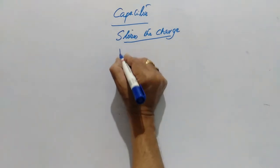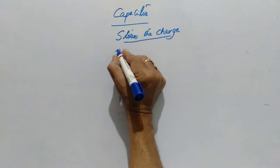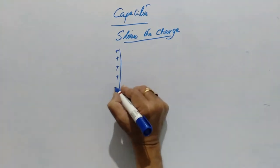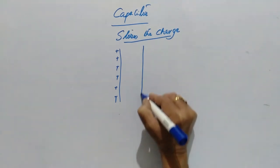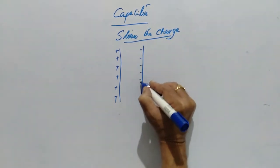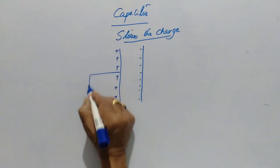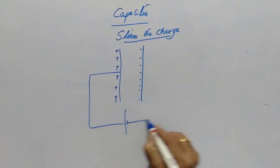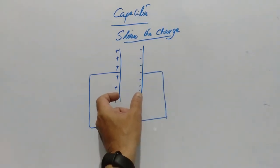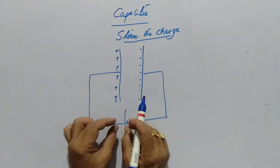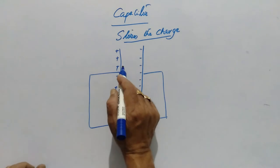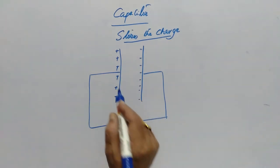If capacitor stores the charge, then how does it act like an energy storage device? When on one plate a positive charge and on other plate a negative charge is given with the help of a battery, then this acts like a capacitor. When we remove the battery, the charges are still stored on the plates of this capacitor.